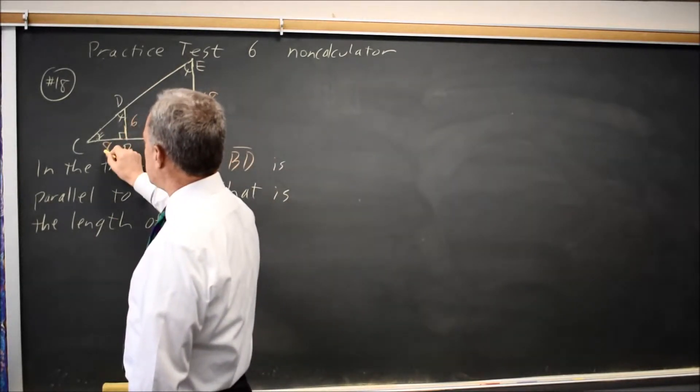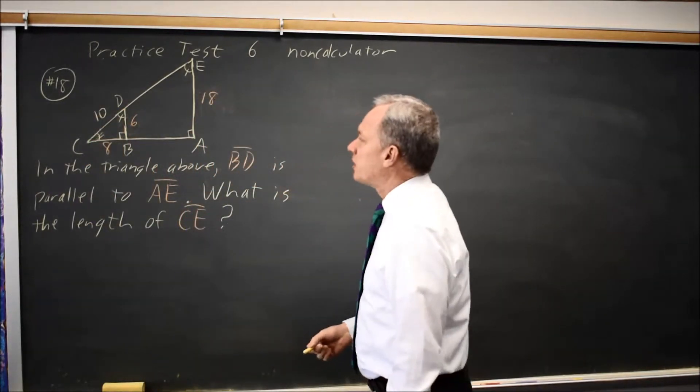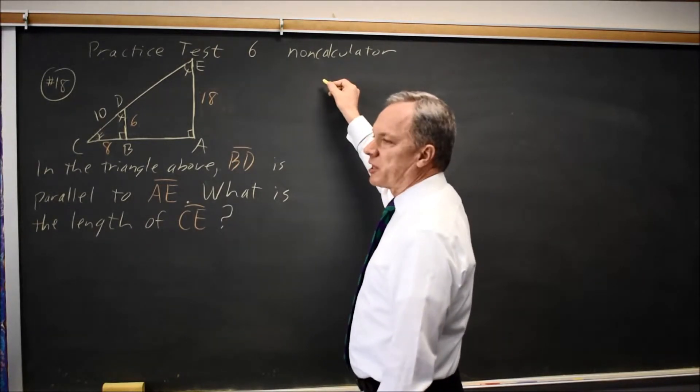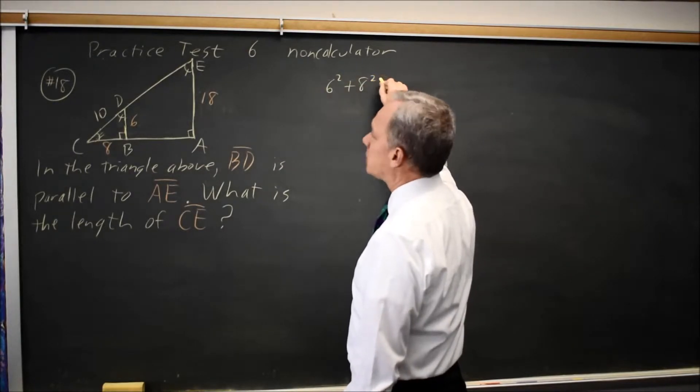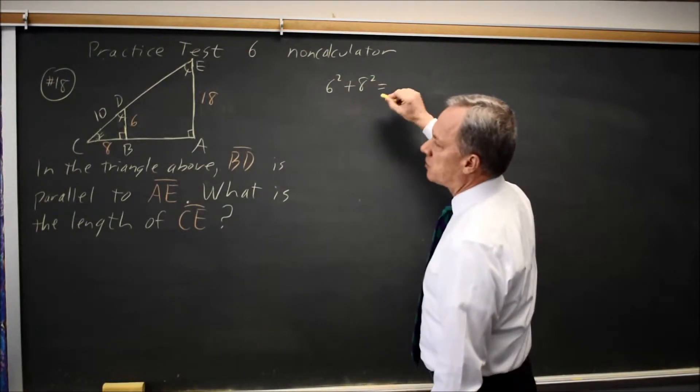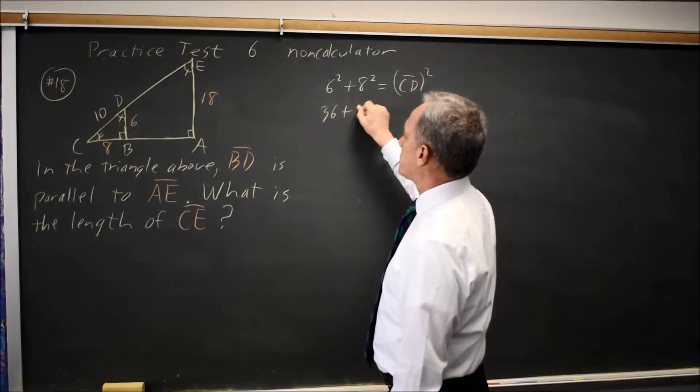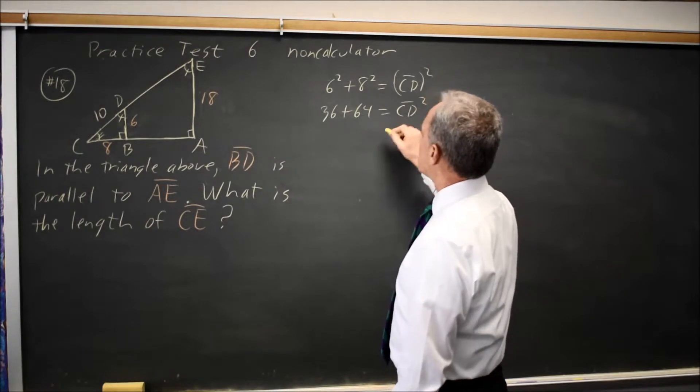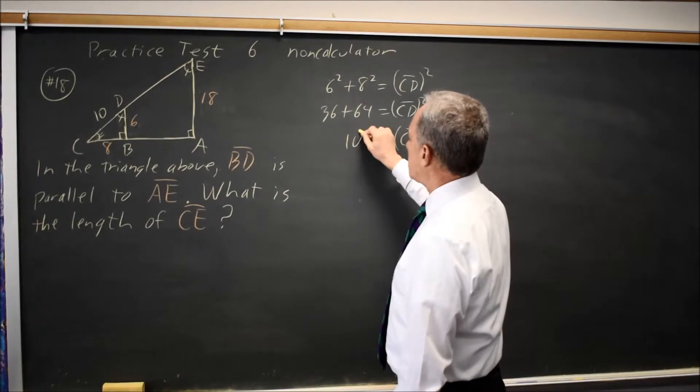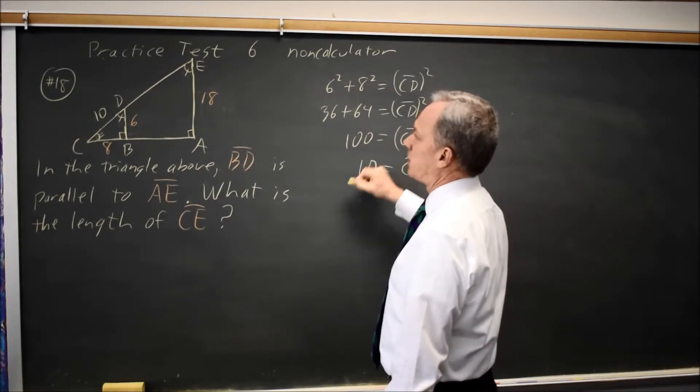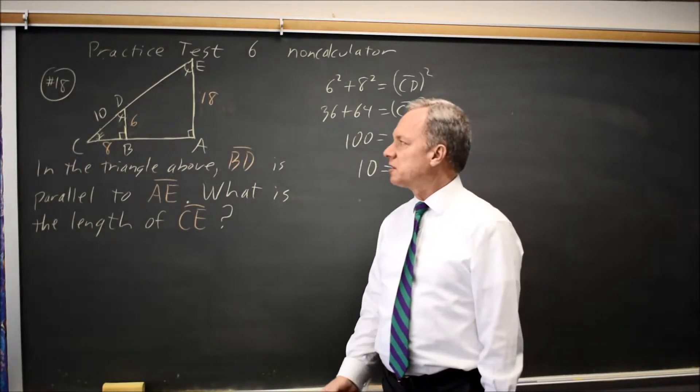The small triangle here is 6 and 8. The third side will be 10 because that's twice a 3, 4, 5 triangle. If you're not sure, they give you the Pythagorean theorem at the start of the section. We know that 6 squared plus 8 squared equals the hypotenuse squared, which I'm going to call CD squared. So that's 36 plus 64 equals CD squared. CD squared equals 100, so CD equals 10, as I found from recognizing the 3, 4, 5 triangle doubled.